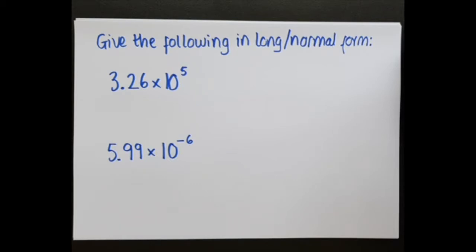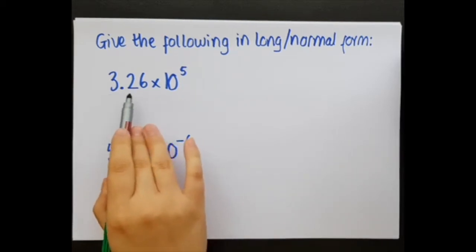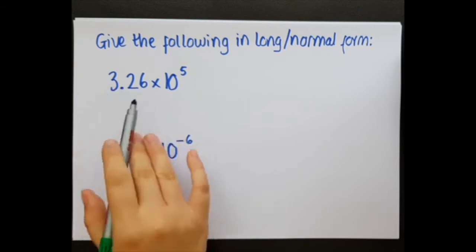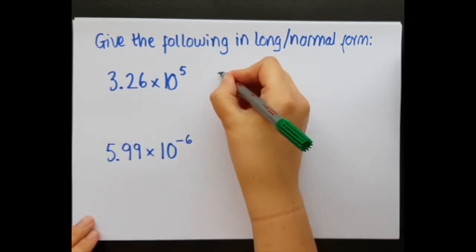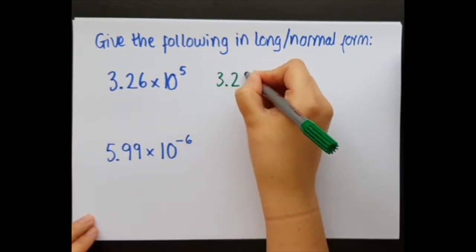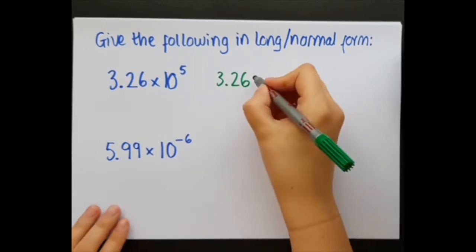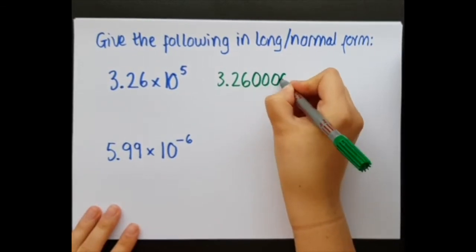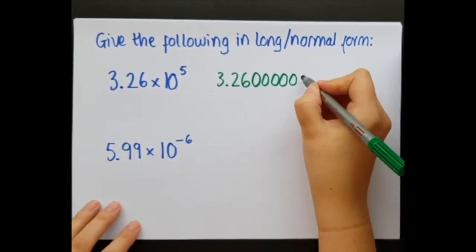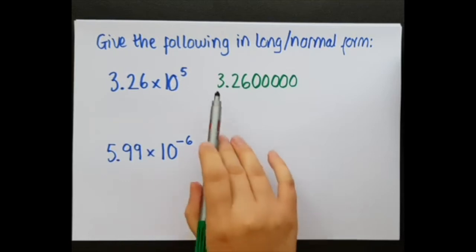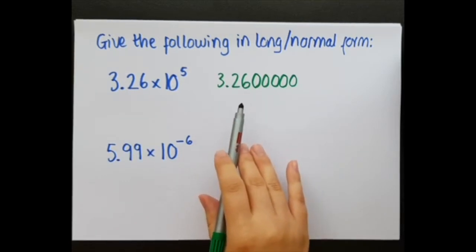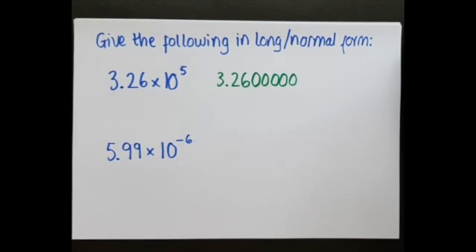So the first thing I want to do is write out the decimal part of this, so 3.26. And now what I can do is add a bunch of zeros to the front and back of this without changing what this number means. So I'm going to add a bunch of zeros to the back because that's still 3.26, it's just now got some zeros there as well.